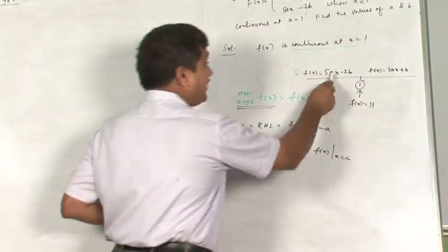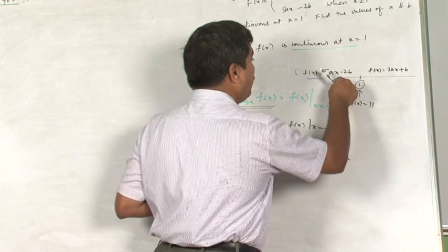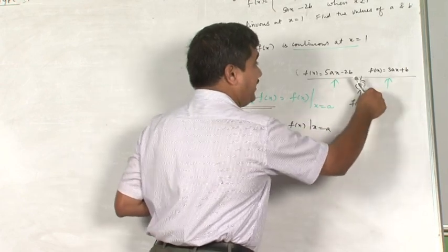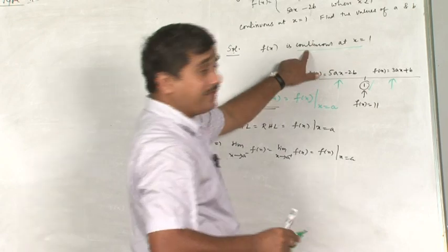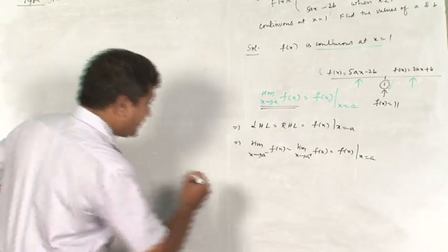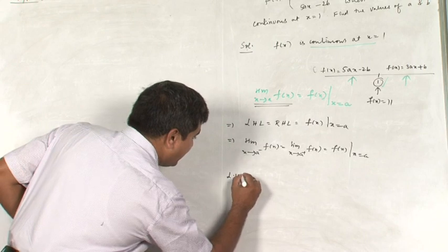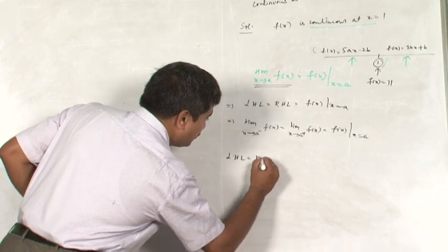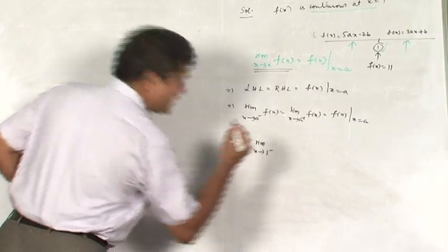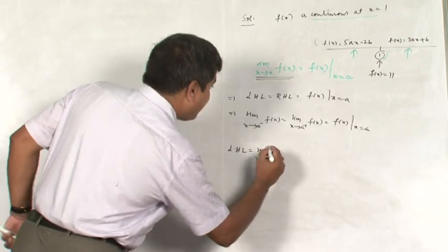Why? Because function is different on both sides of the point where the continuity has already been established. Now I shall begin with LHL, limit x tends to 1 minus. I am going for 1 minus LHL.